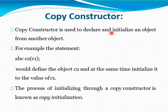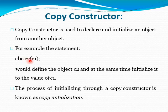Then the Copy Constructor. A Copy Constructor is used to declare and initialize an object from another object. For example, ABC is a class, C1 is an object, and C2 is another object initialized from C1 of the same class — that is called a Copy Constructor. We define object C2 and at the same time initialize it to the value of C1. The process of initialization through the Copy Constructor is known as copy initialization.